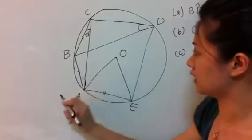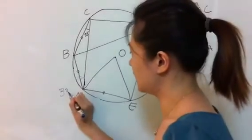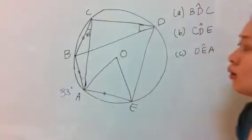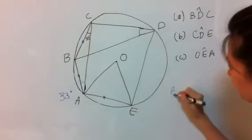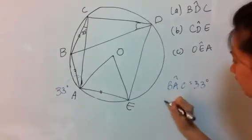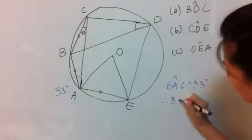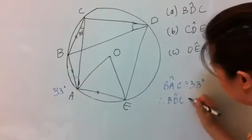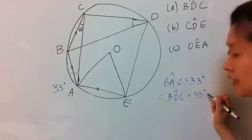So, this angle is 33 degrees. So, when I have BAC, 33 degrees, therefore, BDC is also 33 degrees. I got my answer.